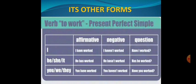Let us see the other forms of present perfect simple. Subject I: affirmative sentence, I have walked. Negative sentence, I haven't walked. Question, have I walked? He or she: has walked, hasn't walked, has he walked? You: you have walked, you haven't walked, have you walked? We: we have walked, we haven't walked, have we walked?